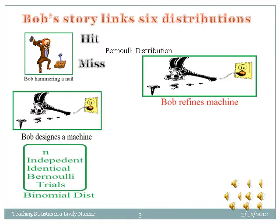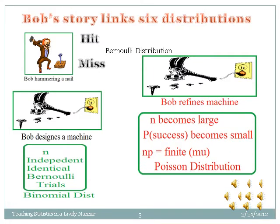Bob refined the machine very well so that the probability of bending a nail is very small. Now Bob considers bending a nail as a success and fixing a nail as a failure. It is natural that the machine can now make a large number of attempts. Note that when the number of trials n becomes large, the probability of success p is very small, and n multiplied by p is finite — say the Greek letter mu. Under these three assumptions, the binomial distribution is approximated as the Poisson distribution.